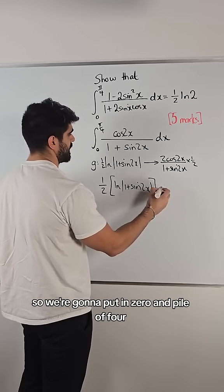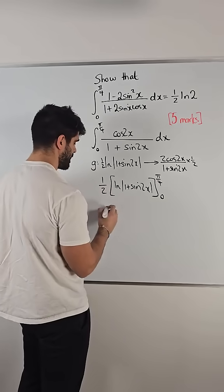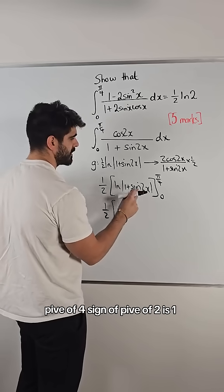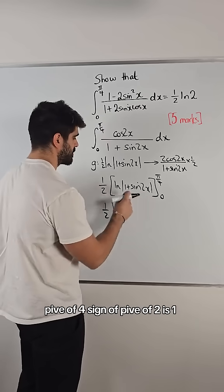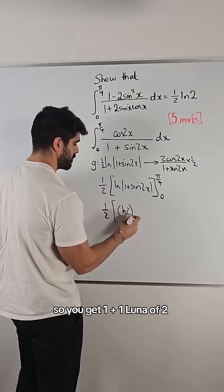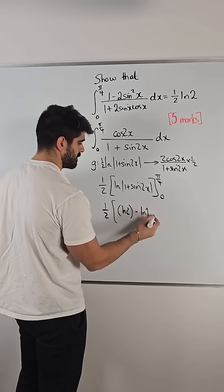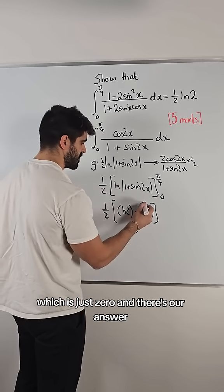So, now we're going to put in 0 and pi over 4. So, we have a half. Putting in pi over 4, sine of pi over 2 is 1. So, you get 1 plus 1, ln of 2, minus putting in 0, sine of 0 is 0. We get ln of 1, which is just 0.